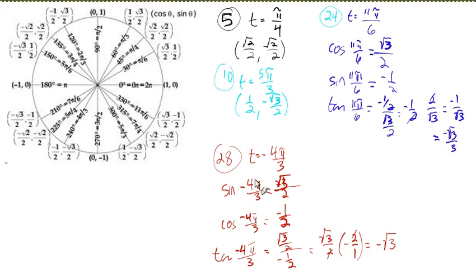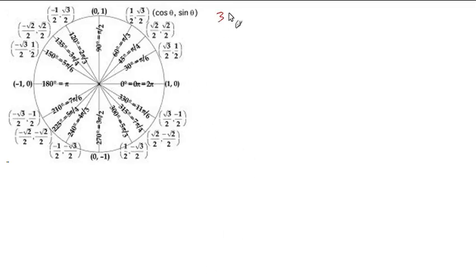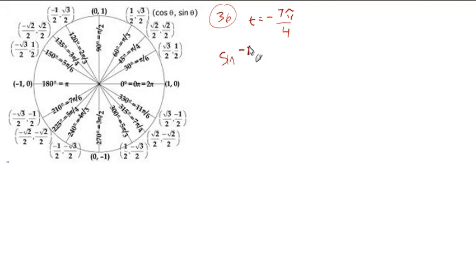And there we go — that is the sine, cosine, and tangent of negative four pi over three. Next, we'll go on to 36. We want to find all six trigonometric functions of the real number T equals negative seven pi over four.